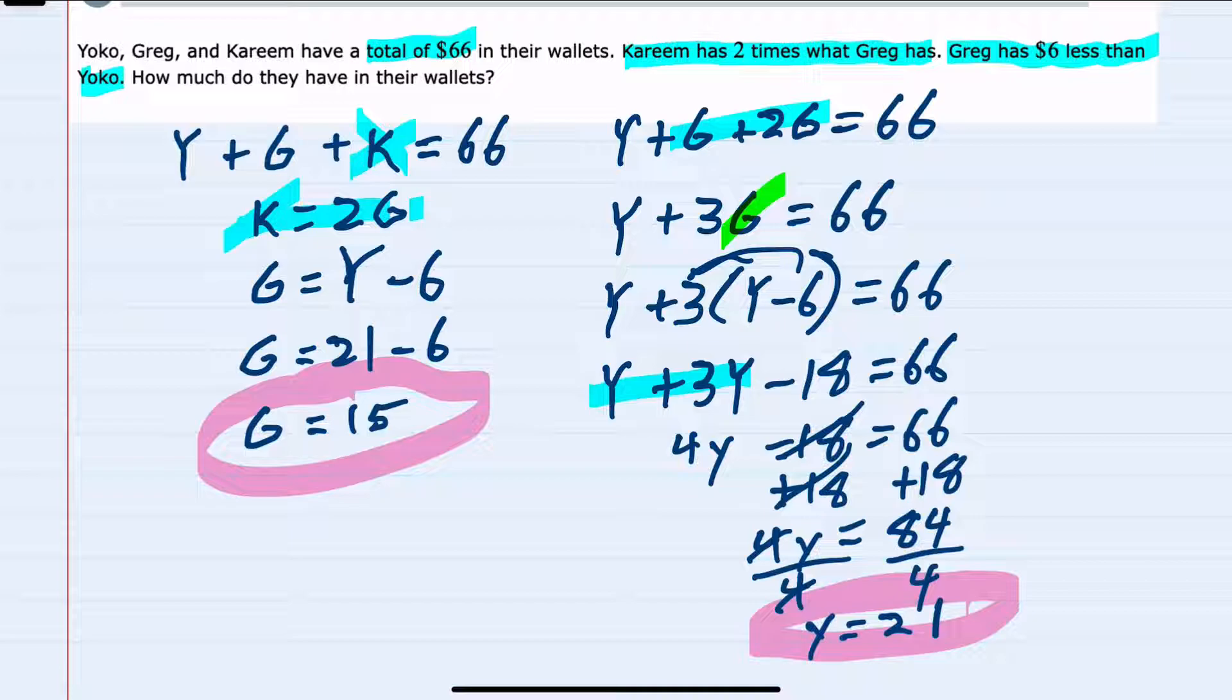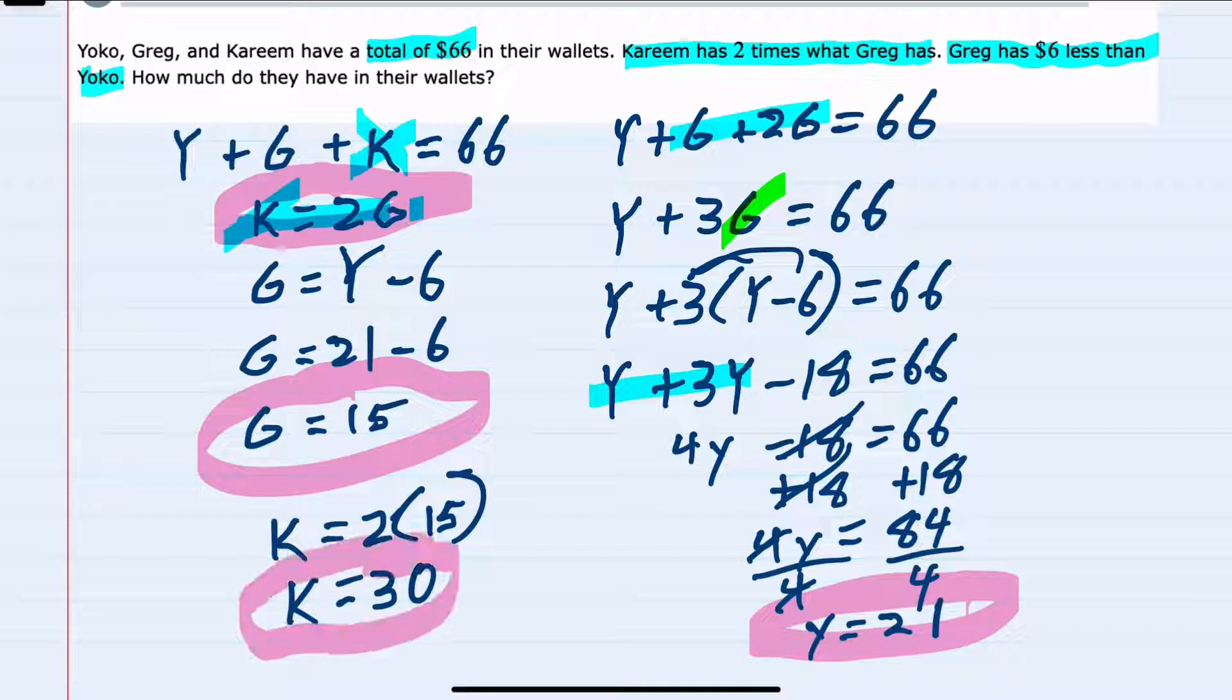Now that we know Greg's, we can look back at that middle equation. Kareem has twice as much as Greg. So 2 times 15 would mean that Kareem has $30. So we have found all three: Greg, Kareem, and Yoko's money.